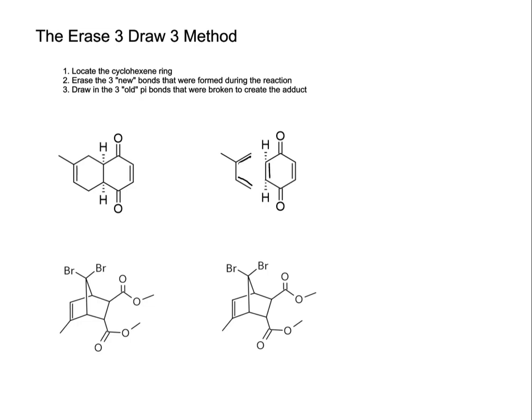For the second Diels-Alder adduct shown on the bottom, it looks a lot more complicated than the one above, but really all we need to do is follow the same three steps. So we're going to locate the cyclohexene ring, and we're going to look across from that new pi bond, and we're going to erase those two new bonds. Then we're going to erase that pi bond that was formed because that one's also new. Now we just need to draw in the three old pi bonds that were broken to create the adduct. So again, we have the conjugated diene — these two bonds were adjacent to where we just erased the pi bond — and then across from that pi bond that we erased, that's where we had the dienophile double bond.